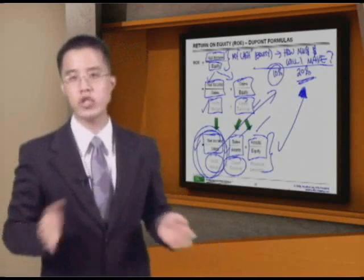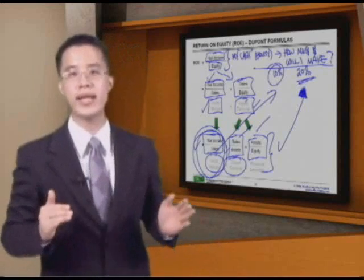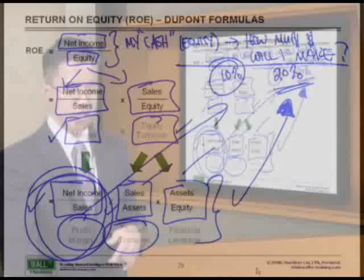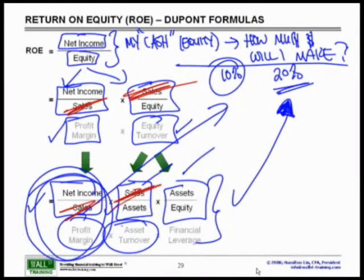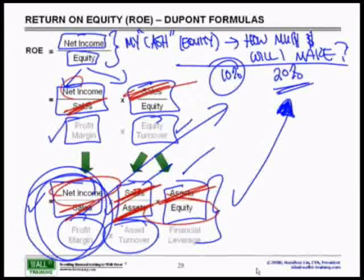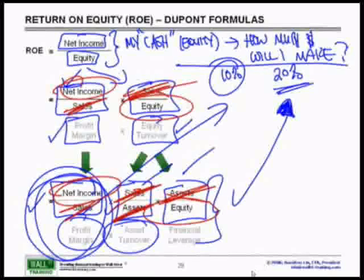You can apply this to any ratio and continue breaking it down, because simple algebra shows that the sales cancel out and the assets cancel out, and you still end up with ROE — net income over equity — at the end of the day.